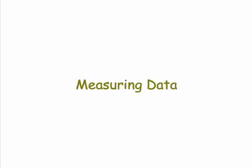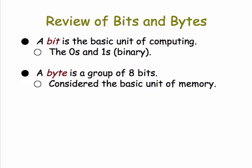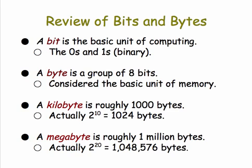We're going to focus on the first two levels. Measuring data: a bit is the basic unit of computing. A byte is a group of eight bits — it's the basic unit of memory. A kilobyte is roughly a thousand bytes; actually, when talking about computer memory, it's two to the tenth, or 1,024 bytes, because memory is divided into binary quantities evenly divisible by powers of two. A megabyte is roughly a million bytes, or actually two to the twentieth bytes, which is a bit over a million bytes.